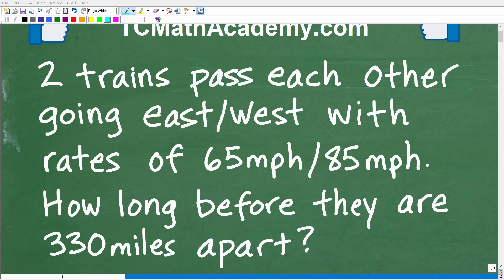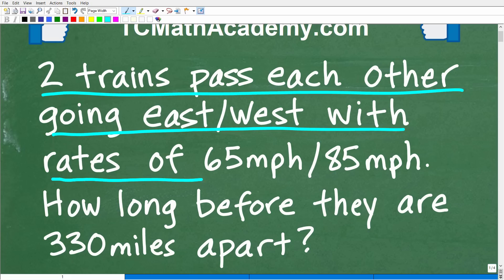Okay, so if you like a good math challenge, this is the perfect little problem for you. As a matter of fact, let me go ahead and read the problem. Two trains pass each other going east and west with respective rates of 65 miles per hour and 85 miles per hour.